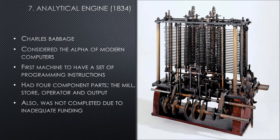The Analytical Engine had four component parts: the mill, store, operator, and output. These four parts have similarities with the parts of computers we have now. The mill acted as the arithmetic and logic unit. The store acted as memory. The operator acted as the control unit. And the output worked as the input and output system or interfaces which we have now.